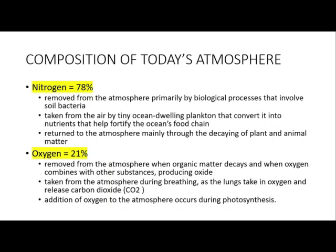Here are the common gases we can find in the atmosphere. The largest bulk is nitrogen, which is 78%. It is removed from the atmosphere through processes done by bacteria in the soil. It is also taken by planktons to fortify the ocean's food chain. It is returned to the atmosphere mainly through the process of decaying plant and animal matter.